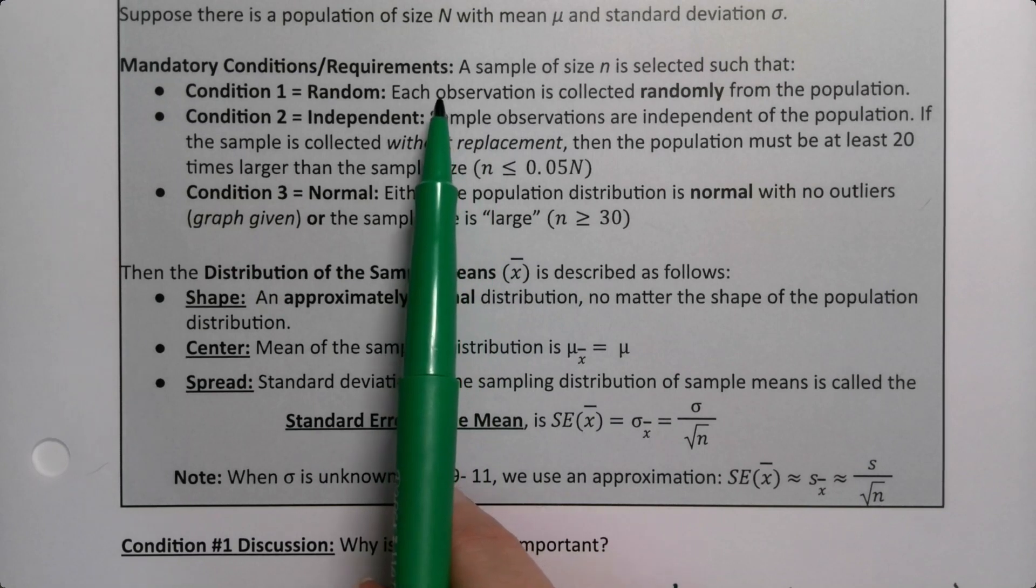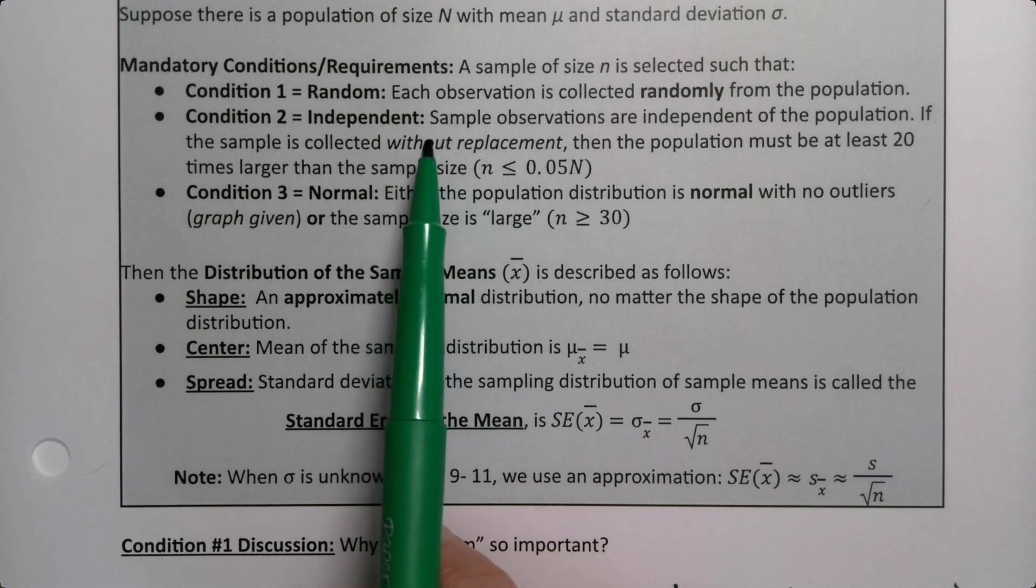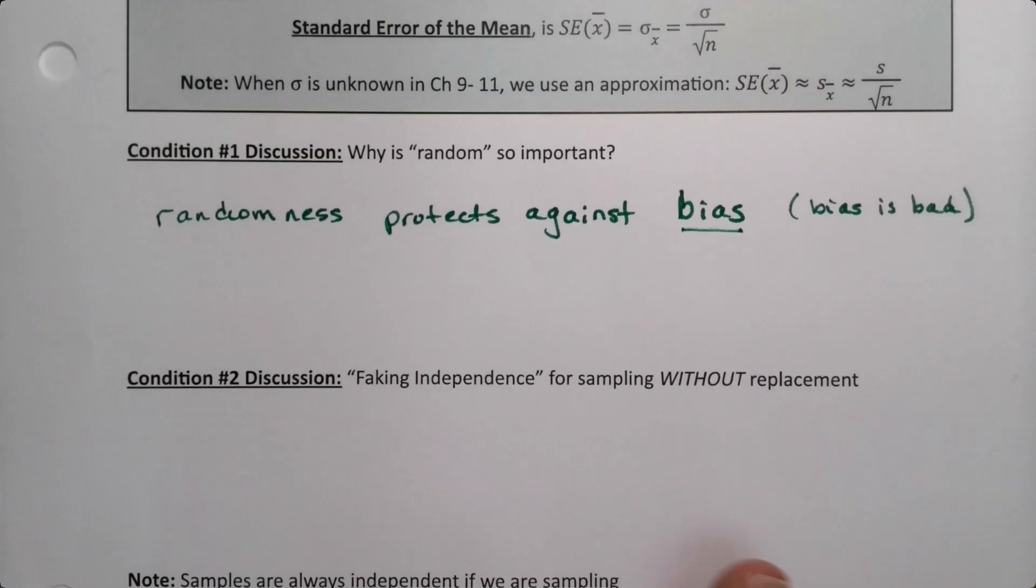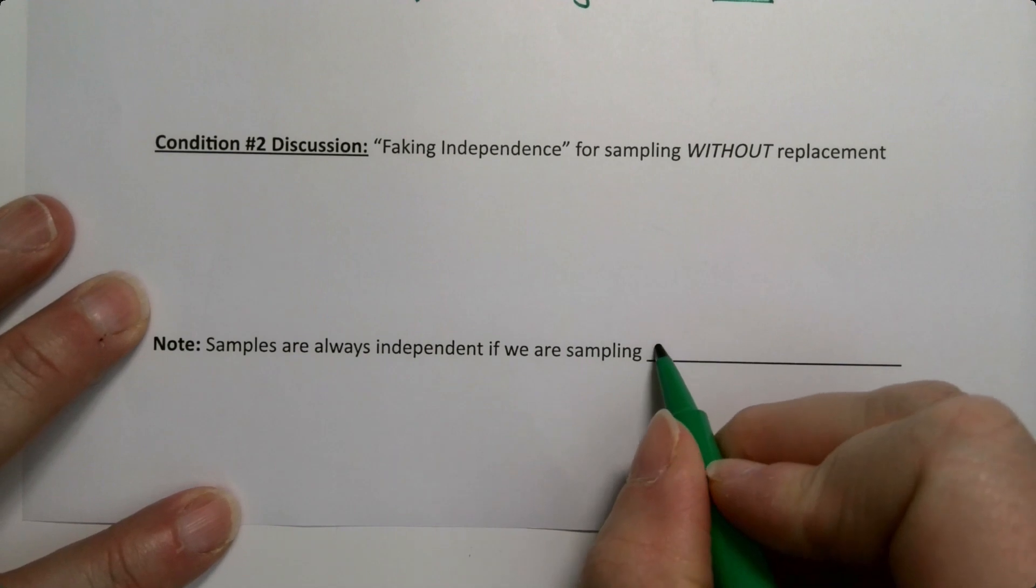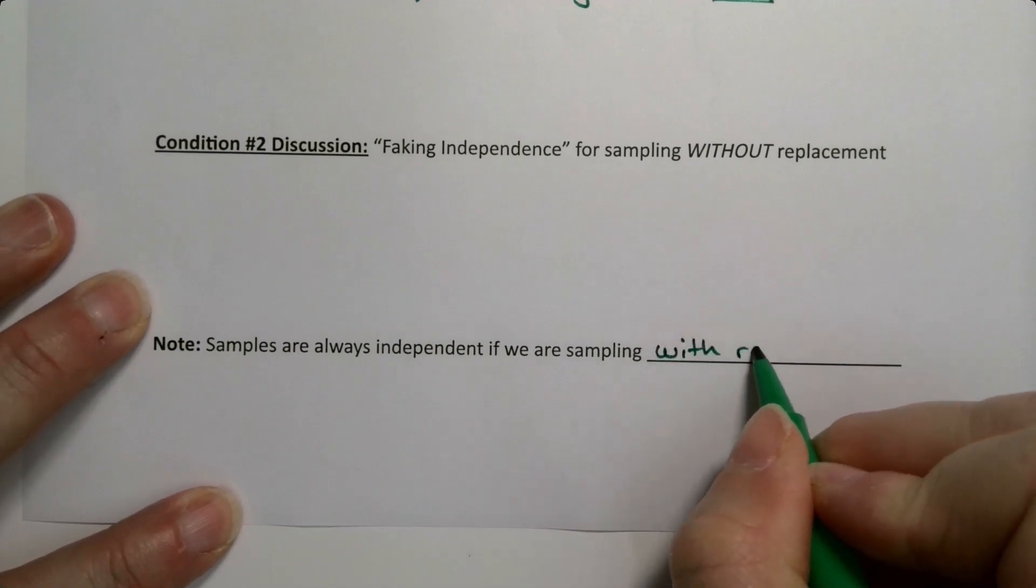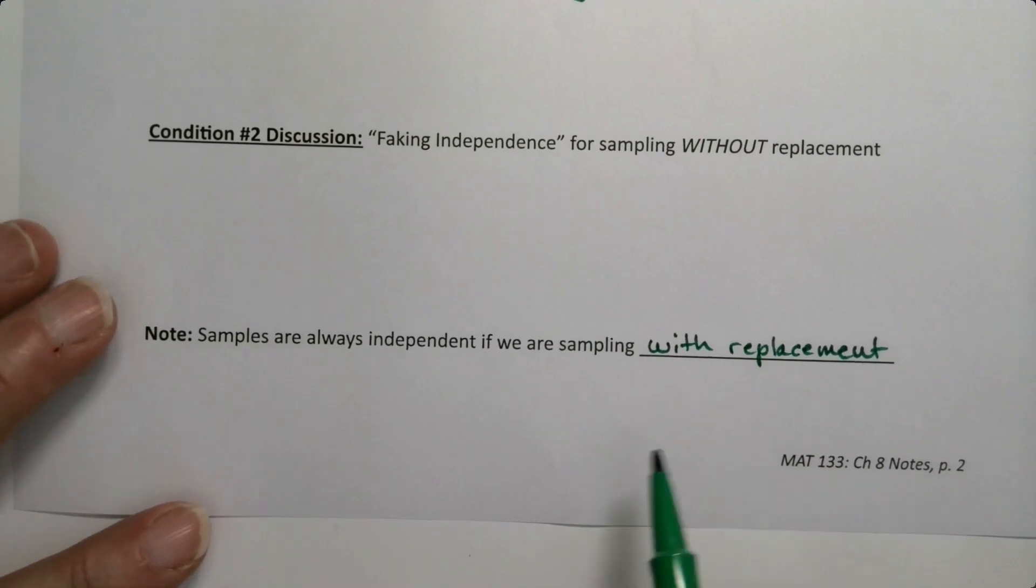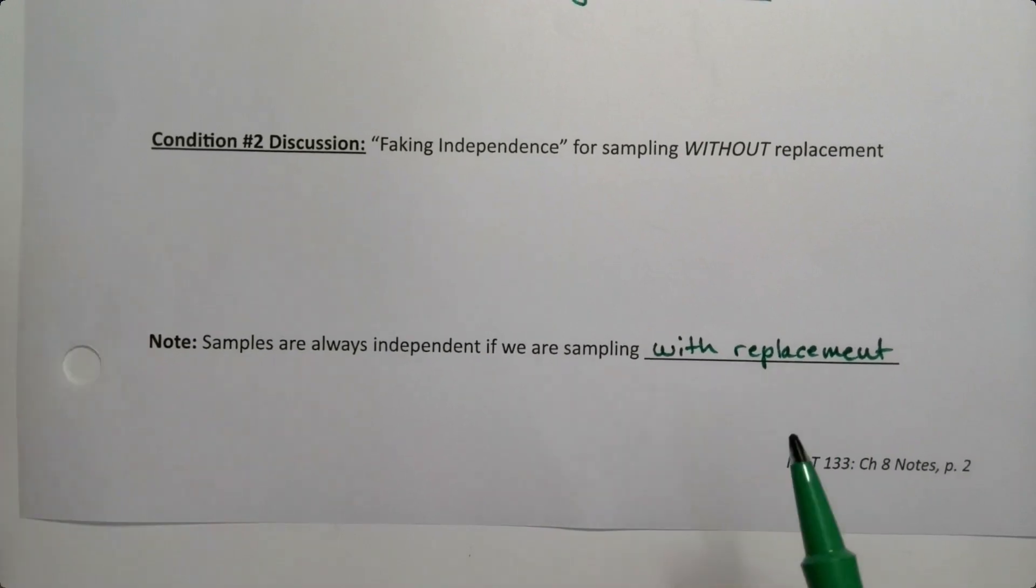If you're drawing numbers from a large drum, you put everybody's number back in every time. Everybody is just as likely to be called every time. That's very unusual for most of our samples, so we don't really talk about it. But if it's with replacement, you're good. Which is what I'm mentioning down here - samples are always independent if we are sampling with replacement. So if we have replacement, no worries. If you're putting everybody's number in every time, no problems.